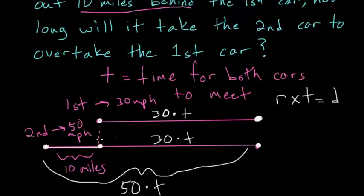So in other words, if we look specifically at the second diagram here of the second car, we know that the 10 miles in the beginning plus the 30 times t is just going to be equal to this total distance, which we figured out is 50 times t.